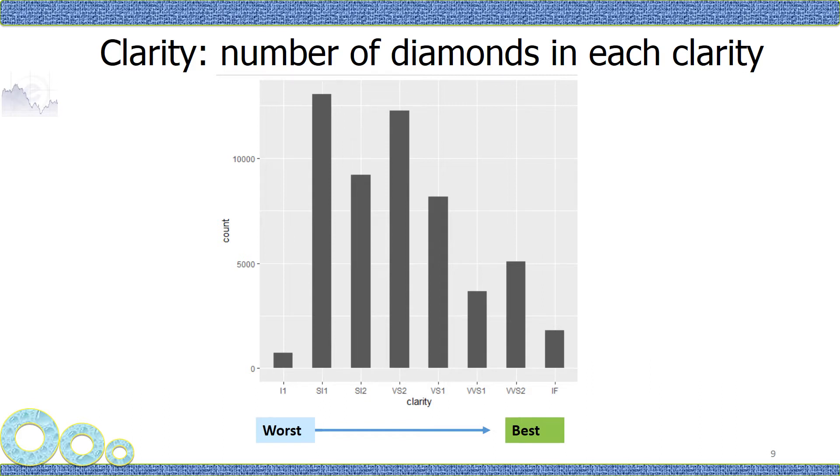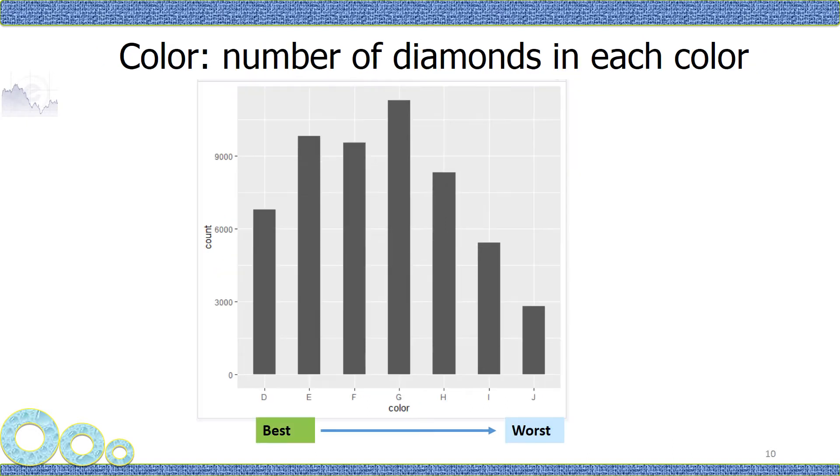As you can see for the clarity, I1 and IF are very few, which means the worst clarity and the best clarity are not that many. What about color? Color is evenly distributed among different grades.